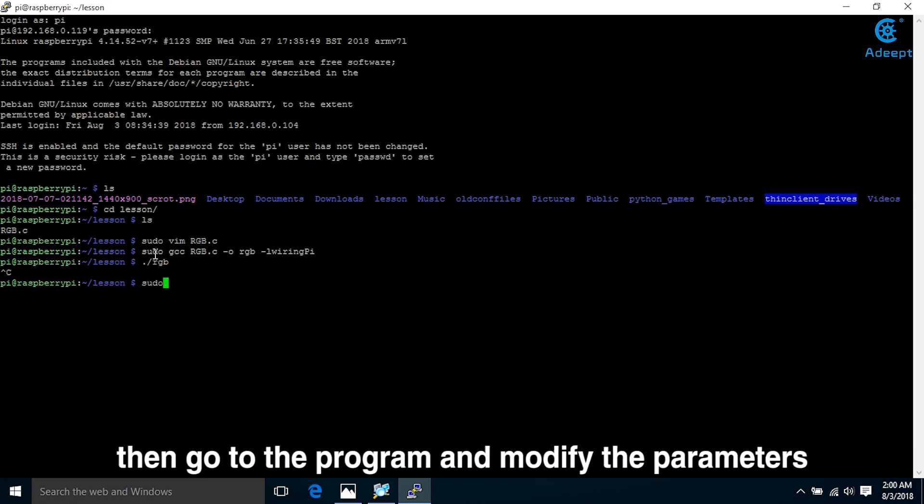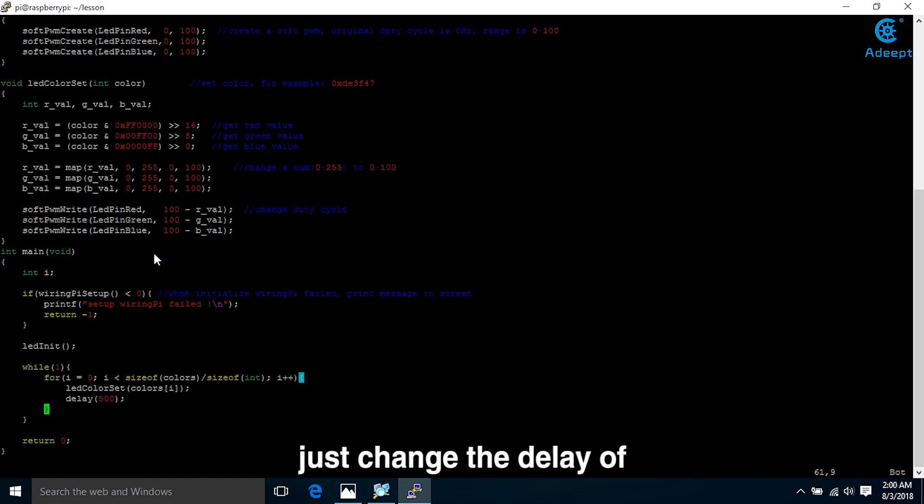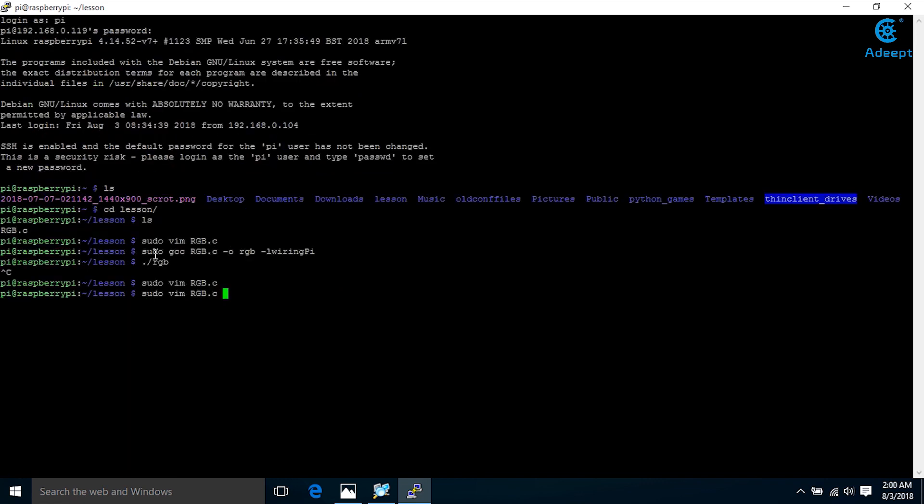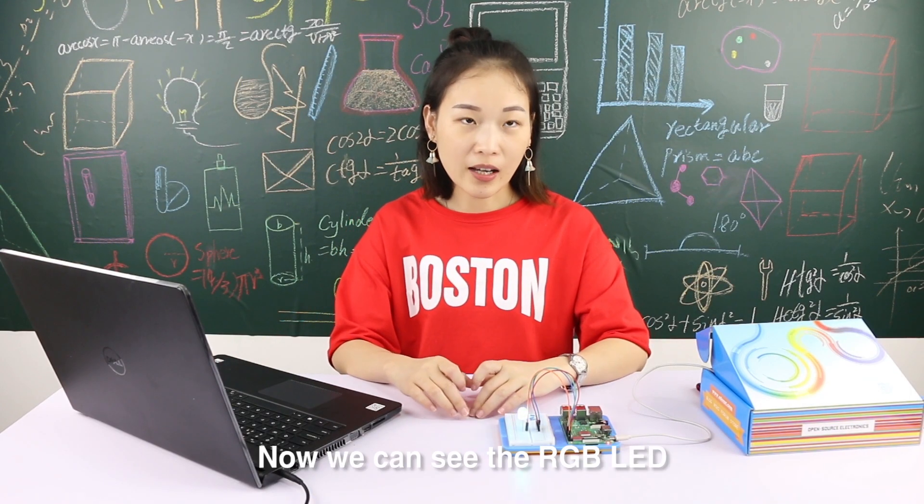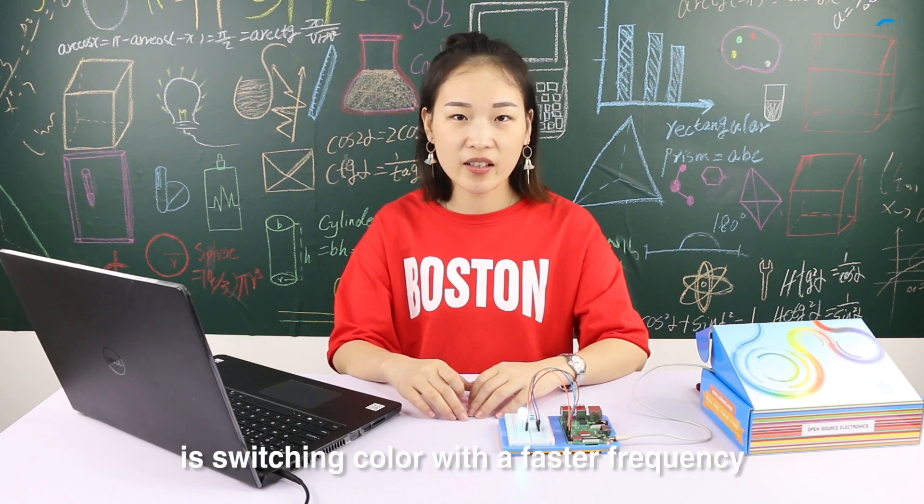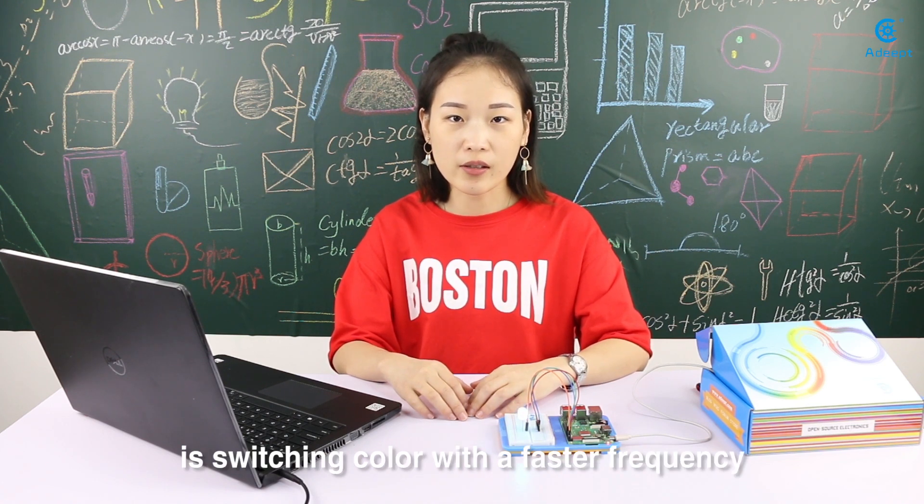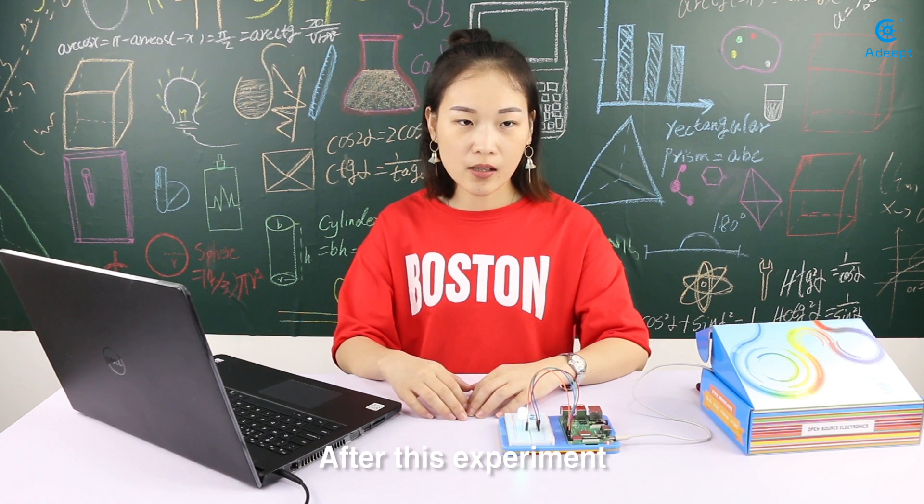Then go to the program and modify the parameters. Just change the delay of 500ms to 50ms. Then write and exit. Now compile it again. Then execute. Now we can see the RGB LED is switching color with faster frequency.